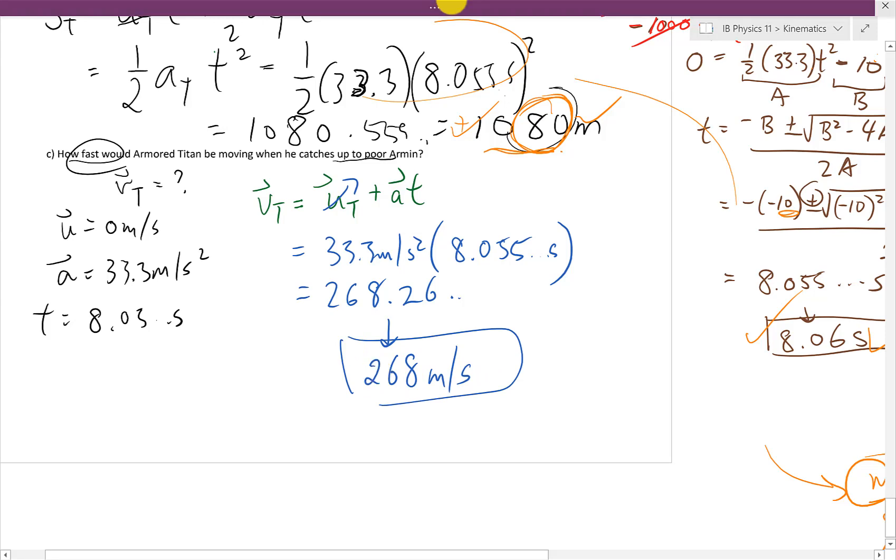Okay, doing a quick check to see if this value makes sense. So it's positive, which is good. The direction should be positive. The units, we have meters per second squared times seconds. One of the seconds cancel, leaving us with meters per second. The value here, around 268. Well, I mean, if the Titan has to catch up to Armin at 8 seconds and 1,000 meters behind.